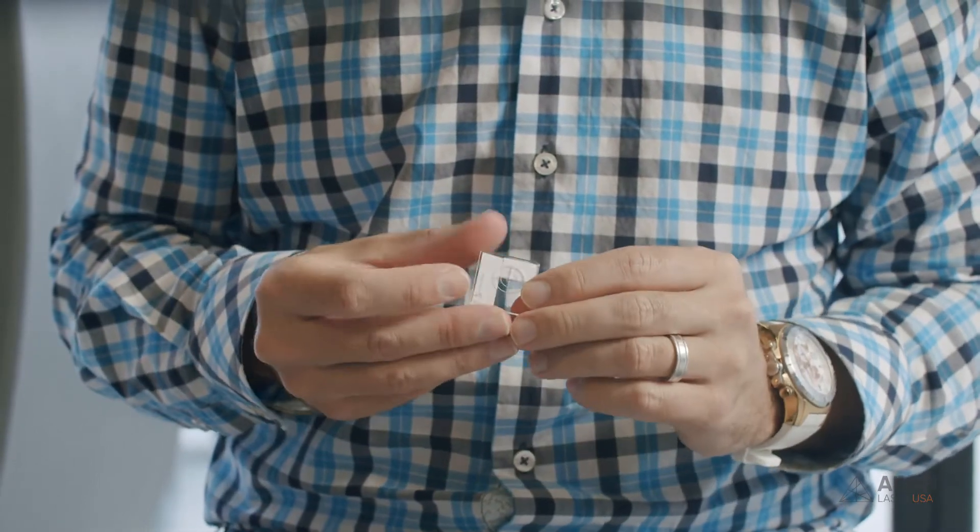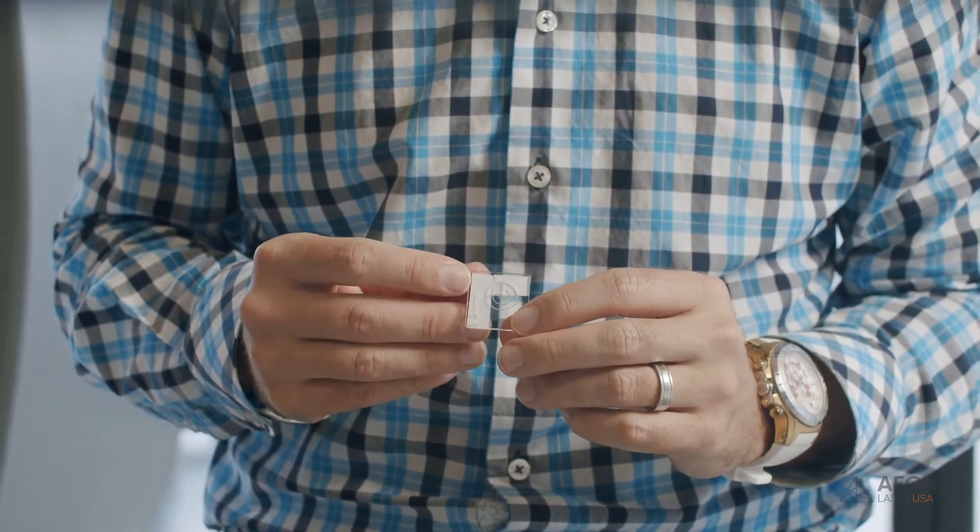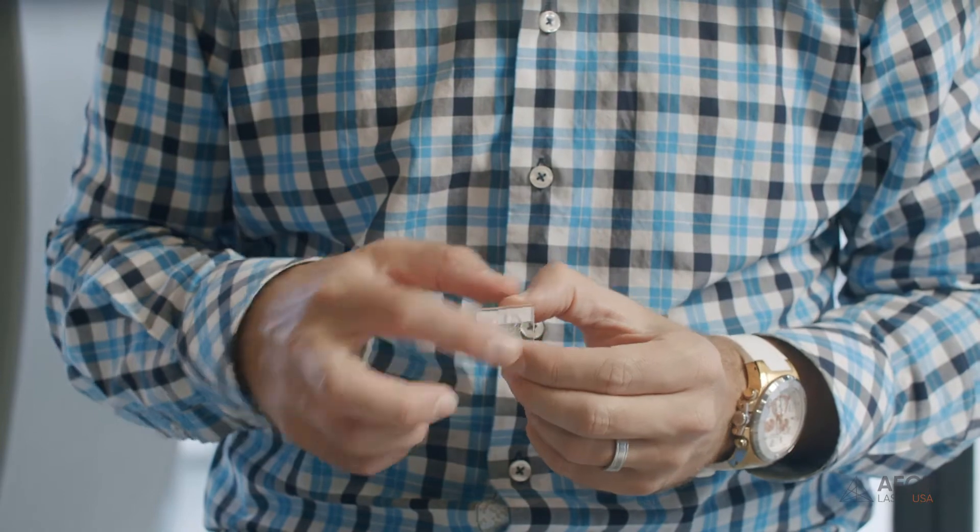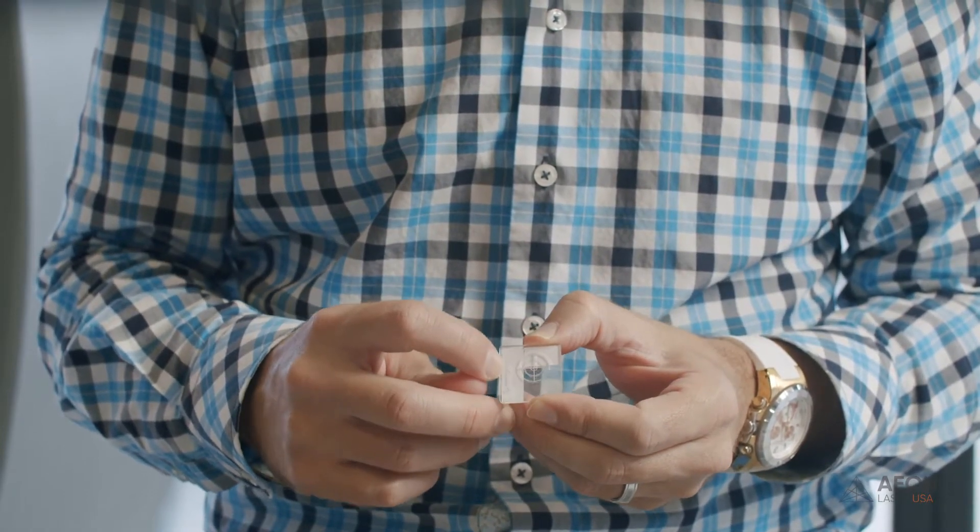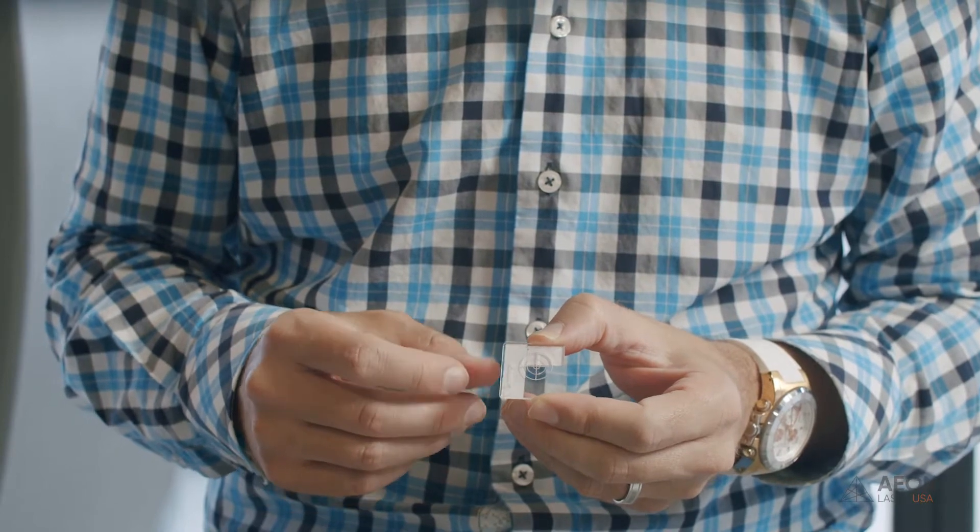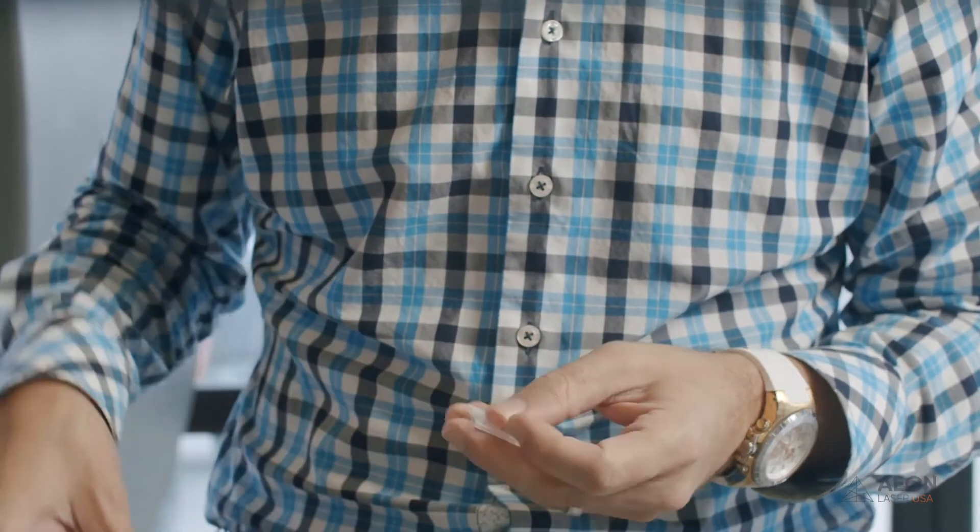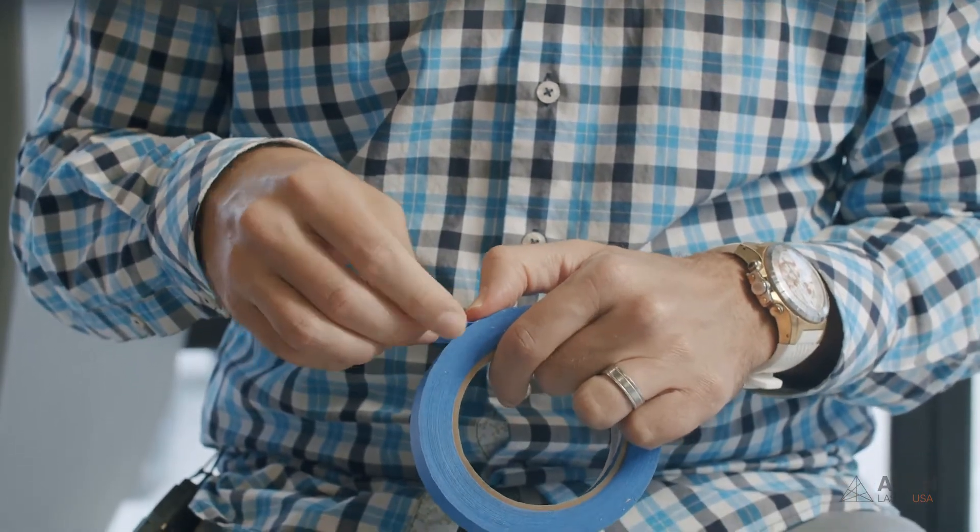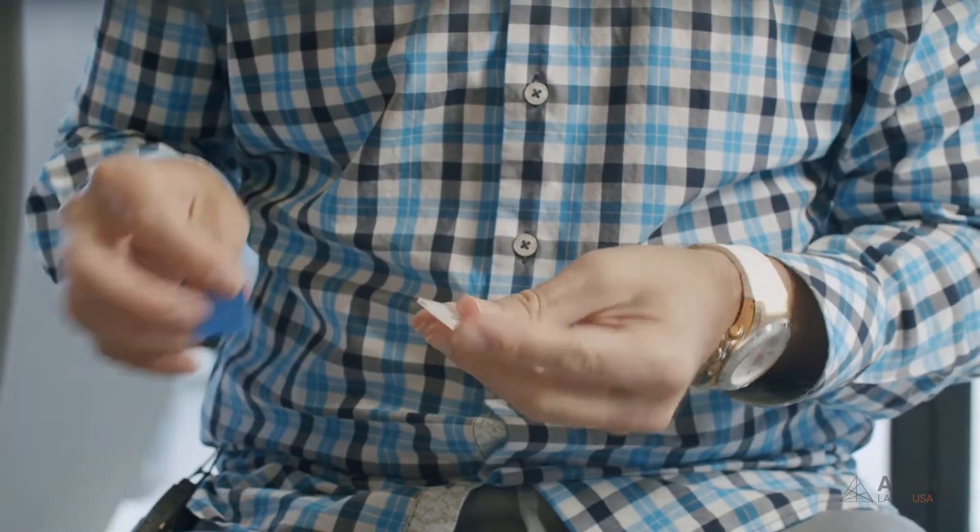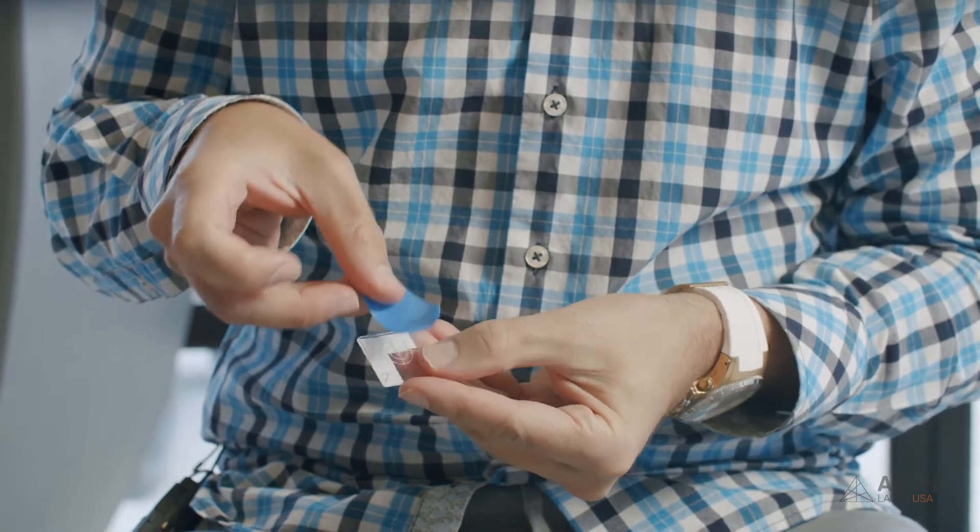Now we're going to get our number two target out of the accessories box. This is a square target, and it's got the number two engraved on it, with an arrow showing which way is up. And same as before, we're going to grab one piece of blue painter's tape, and place it over top of the target.